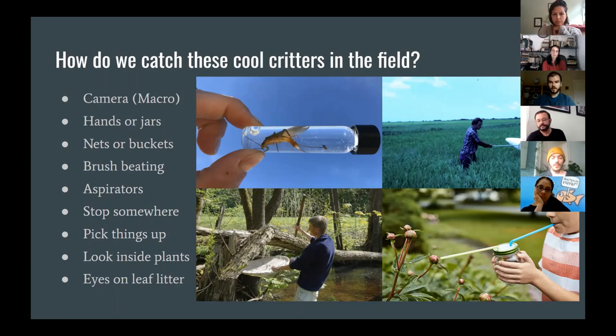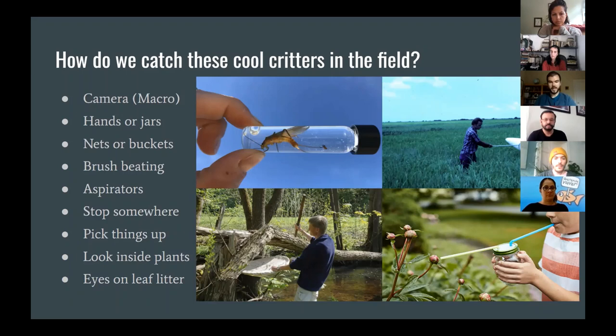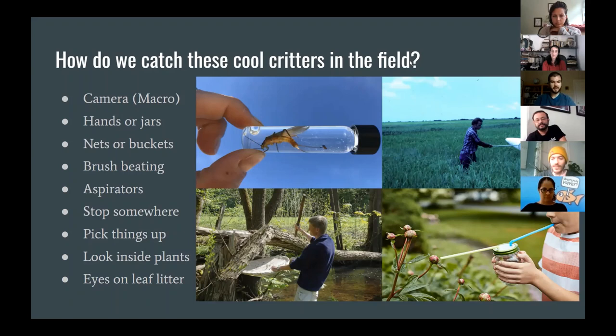Here someone is demonstrating a homemade aspirator. There are fancy custom ones professional entomologists use, but it's easy to make one yourself. All you need is two straws or flexible tubing and a jar with holes in the lid. You just suck in and the insect goes in the tube and ends up in the jar, then you can take your picture.